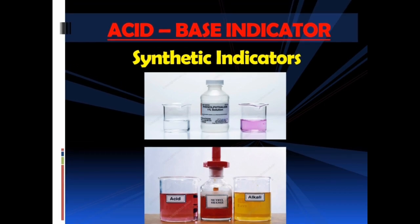Here you have synthetic indicators on the screen. First, phenolphthalein solution; next to it, methyl orange solution. You can see that phenolphthalein doesn't change the color of an acidic solution, but changes the color of a basic solution to pink. Remember that phenolphthalein is a colorless solution. Methyl orange, which is orange in color, changes the color of acidic solutions to red and the color of basic solutions to yellow.